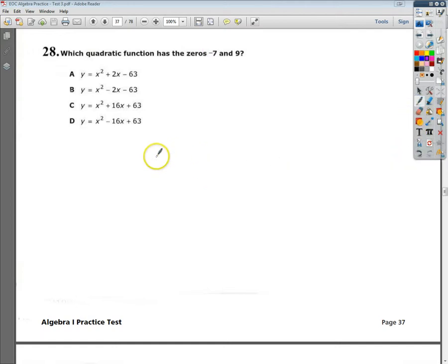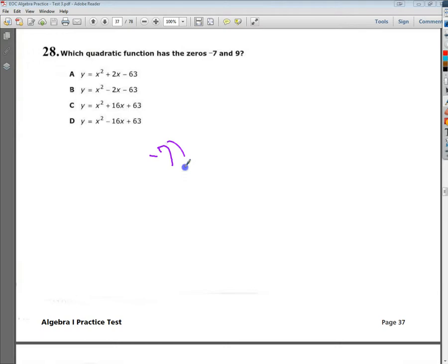But on the next one, if I do negative 7 squared minus 2 times negative 7 minus 63, I may get different results. So I'm going to do negative 7 in parentheses squared minus 2 minus 63. And when I type all this in, it gives me zero. If I do it with nine, make sure both of them work, by the way.